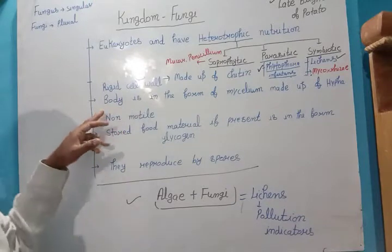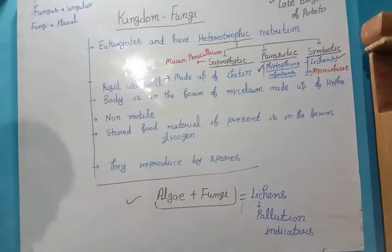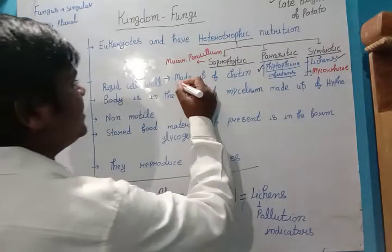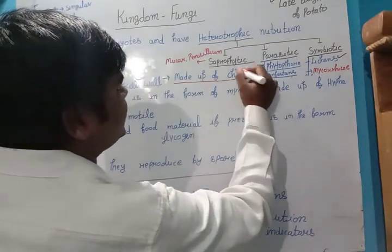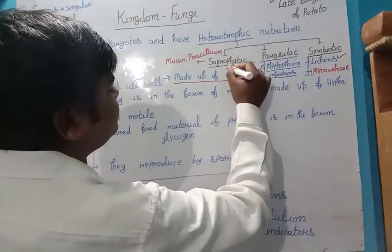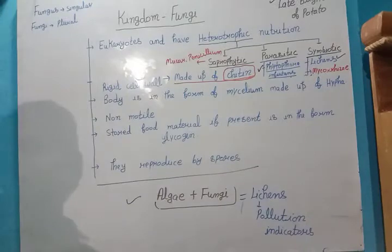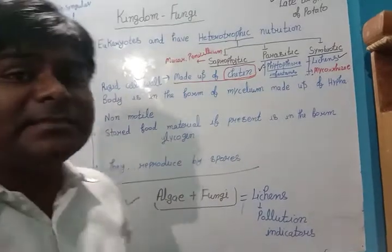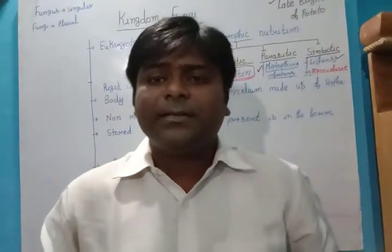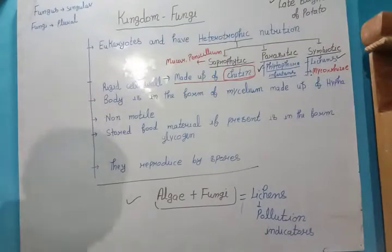An important point is the cell wall. The cell wall of fungi is made up of chitin — it is rigid in nature. Always remember that the fungi cell wall is made up of chitin.